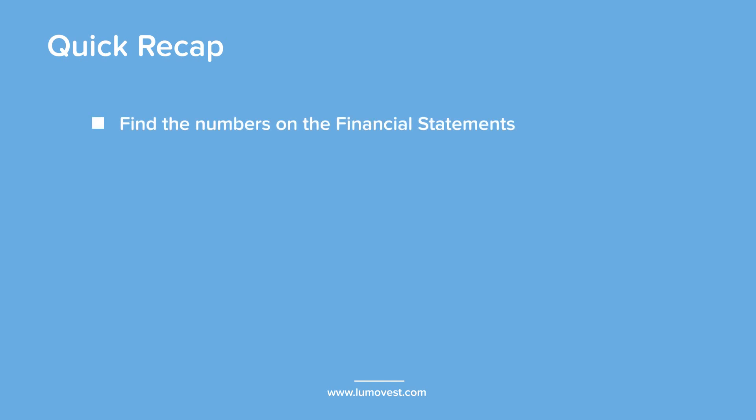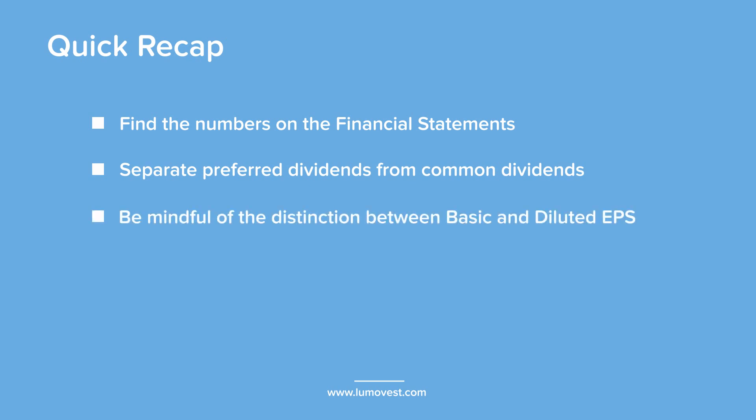So let's quickly recap what we learned here. We can pull the numbers we need to calculate dividend payout from the company's annual financial statements. We can find the total dividend number from the cash flow statement, and the net income, dividend per share, and earnings per share from the income statement. When we calculate the dividend payout ratio using total dividends and net income, we need to be mindful not to include the dividends paid to the preferred shareholders — otherwise it would artificially inflate the payout ratio. When we calculate using dividend and earnings per share, we should use the basic earnings per share number, not the diluted.